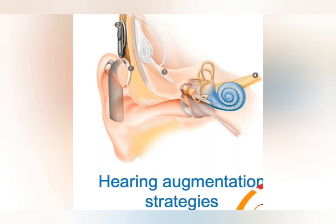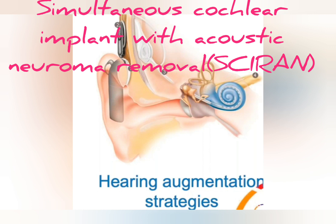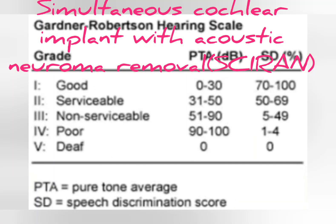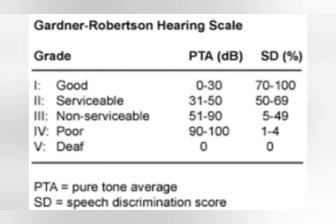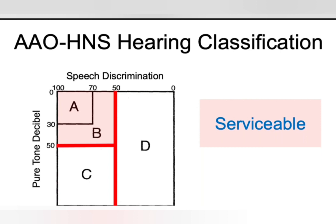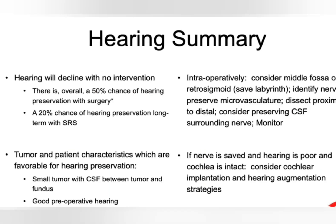If hearing is gone, simultaneous cochlear implantation with acoustic neuroma removal — known as SIREN surgery — can be planned if hearing is non-serviceable before surgery. However, if the cochlear nerve is gone during surgery, cochlear implantation cannot be done and brainstem implant must be planned. If hearing is serviceable, cochlear implantation is not needed, and preserving the cochlear nerve during surgery is the priority. Even if there is no intervention and no tumour growth, hearing will reduce — so in younger patients it is better to operate.